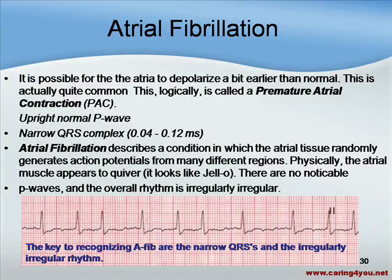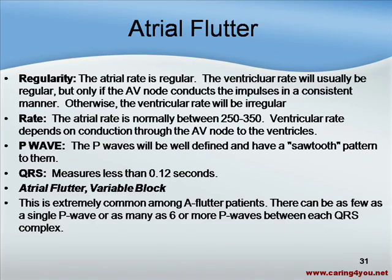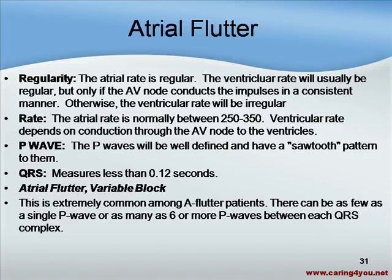Another important rhythm for the NCLEX is atrial flutter. In atrial flutter, the atrial rate is regular. The ventricular rate will usually be regular, but only if the AV node conducts impulses in a consistent manner; otherwise, the ventricular rate will be irregular. The atrial rate in atrial flutter can be anywhere between 250 to 350 beats per minute. The P wave will be well-defined and have a sawtooth pattern. The width of the QRS complex will be within normal limits — less than 0.12 seconds.